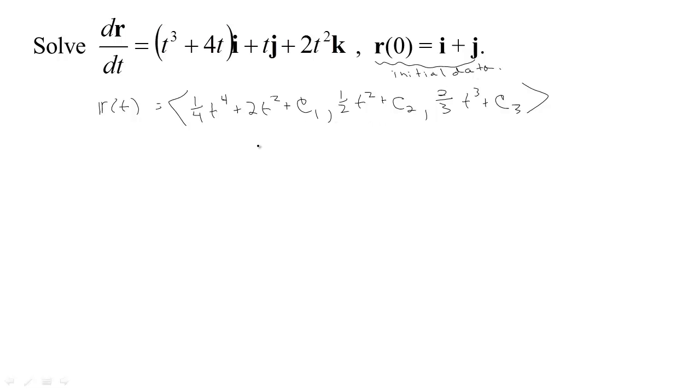That will allow us to choose our constants. According to what we just found by integrating, if we plug in 0 for t, that'll be 0, that'll be 0, so we'll just have c1, and this'll be 0 plus c2, and this'll be c3.